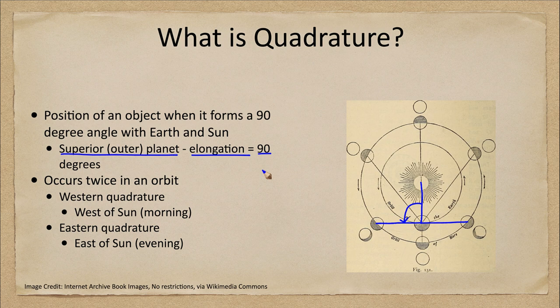So this will occur two times during the orbit. It will occur at western quadrature when the planet is to the west of the sun in the morning sky, or at eastern quadrature when it is east of the sun in the evening sky. So we can see those two times this will occur when that angle will be 90 degrees.